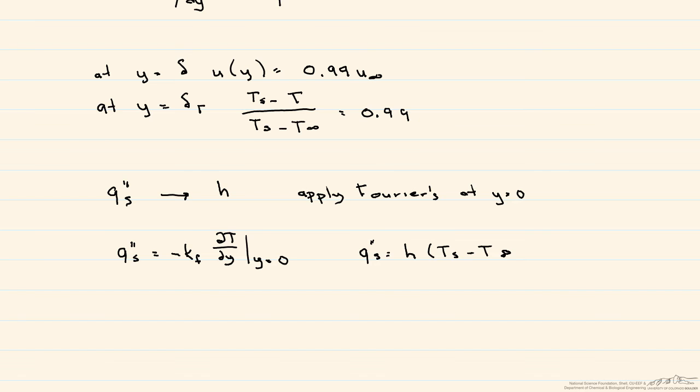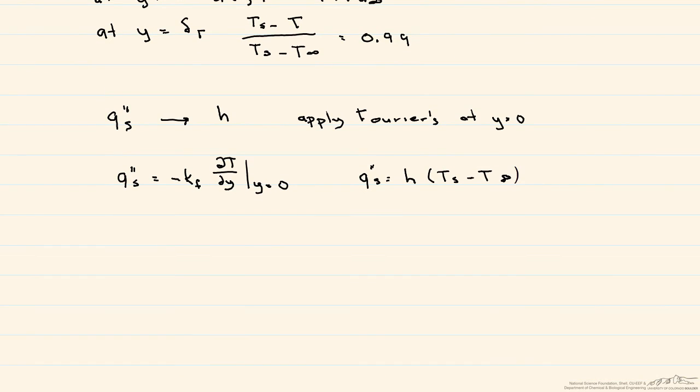If we equate the two of these, what we end up with is that our convective heat transfer coefficient is equal to the thermal conductivity of the fluid times dT/dy at y equals 0, divided by Ts minus T infinity. Note that there's no area term in here because we're dealing only with the heat flux.